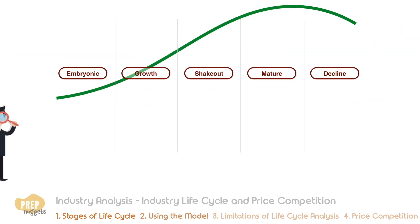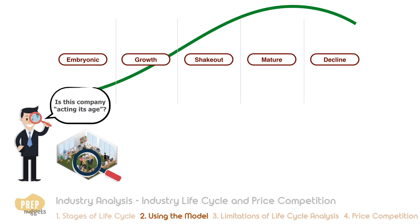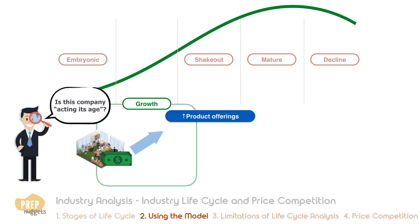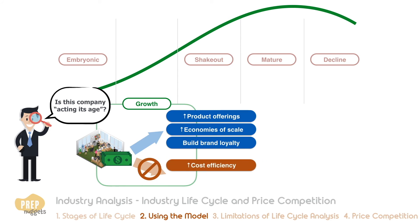An industry's stage in the life cycle is an important component of strategic analysis. When analyzing companies in an industry, an analyst should determine whether a company is acting its age relative to the current stage. For example, if a company is in a growth industry, it should be using its cash to increase product offerings, increase economies of scale, and build brand loyalty. It does not need to worry about cost efficiency yet and should not be paying out dividends, but instead conserve cash for internal growth.